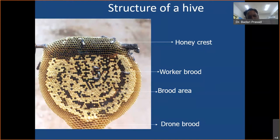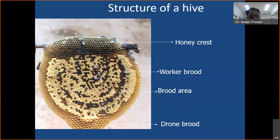Villagers often don't know the difference between the brood area and the honey chamber. They pluck the entire comb and squeeze it, so along with honey they also harvest larvae and eggs — making it contaminated honey. Scientifically, we should only harvest the honeycrest at the top, leaving aside the bottom brood area. But in fear of bee attacks, villagers harvest the entire comb and squeeze it without removing the brood area, resulting in very contaminated honey with eggs and larvae mixed in.